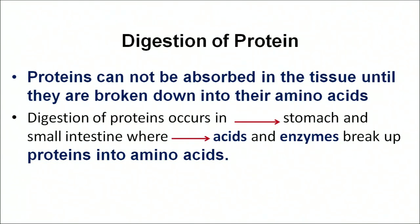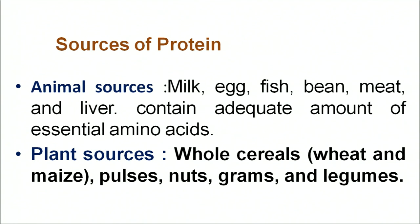Digestion of protein. Protein is not easily or simply absorbed into our tissues — it undergoes certain processes. Digestion of protein takes place when proteins are completely converted into amino acids. Sources of protein: there are basically two sources — animal sources and plant sources. Animal sources include milk, meat, egg, poultry, etc. Plant sources include whole cereal grains, pulses, legumes, nuts, etc.